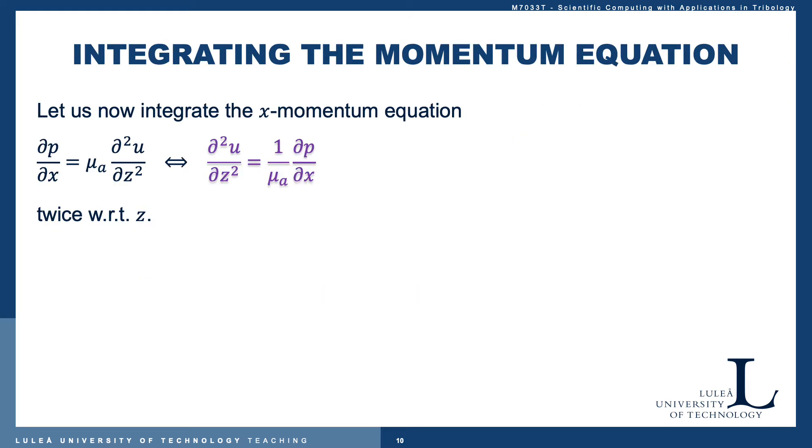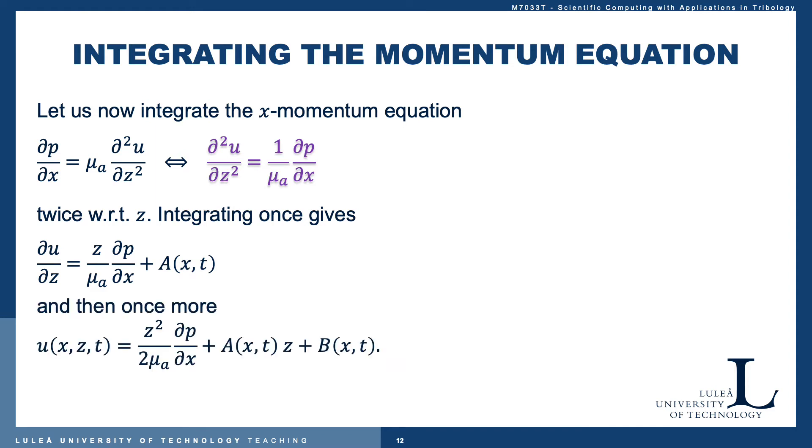Let's start by integrating the x momentum equation with respect to z. First integration is just z times the gradient of p over μ plus an integration constant with respect to z, so a function of x and t only. One more integration yields a quadratic polynomial in z for u with two integration functions which are constant with respect to z.